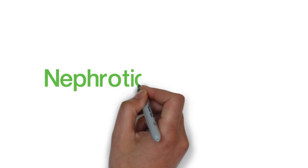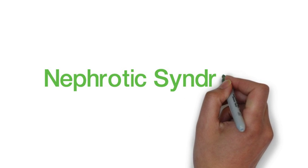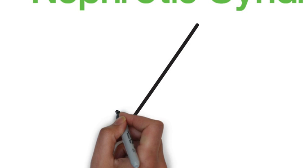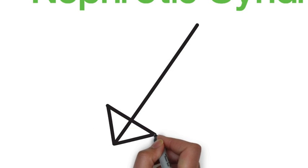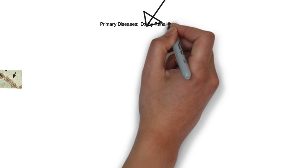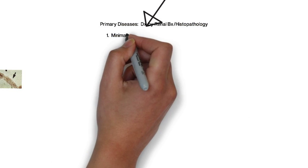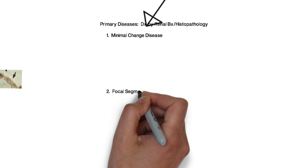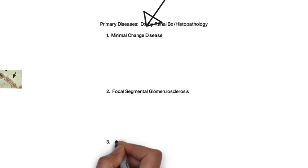So let's turn to nephrotic syndrome. I like to divide these diseases into those that are primary, meaning this is how they present with only kidney disease, meaning edema, hypertension, or reduced GFR. And these primary diseases all require kidney biopsy to make the diagnosis.